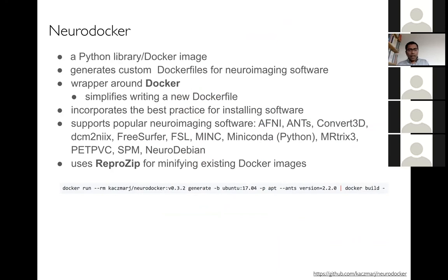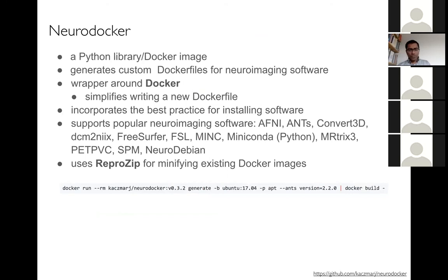To support consistent environments: container technologies keep things fairly consistent, but you need to create containers with the right tools. In our group we created NeuroDocker, a Python library that generates custom Docker files for neuroimaging software. It's a wrapper around Docker that significantly simplifies writing a Dockerfile, incorporates best practices for installing software, and supports all popular neuroimaging software: AFNI, ANTs, Convert3D, DICOM conversion, FreeSurfer, FSL, MRtrix, Python libraries, and others. It also supports access to NeuroDebian, which itself provides access to numerous neuroimaging tools.